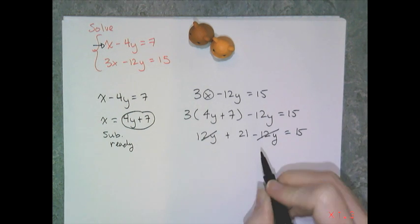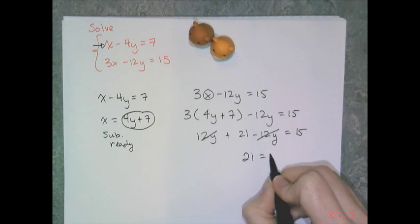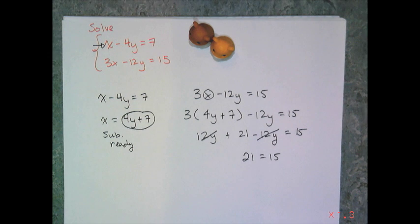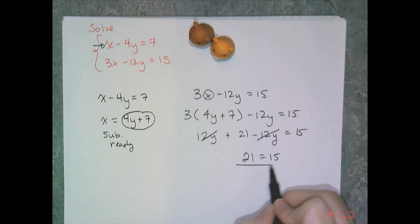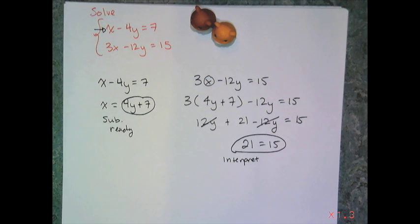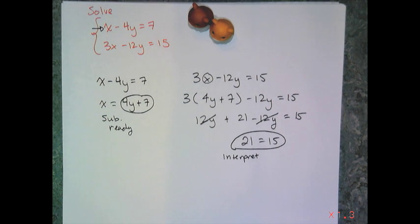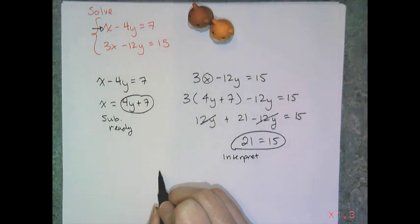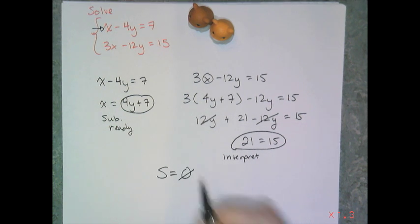And those 12y's cancel and I get 21 equals 15, which is never true. So I have another peculiar situation here. And so I need to interpret this. And the interpretation of 21 equals 15 is, dude, that's not true. That's never true. So I have parallel lines and no solution.